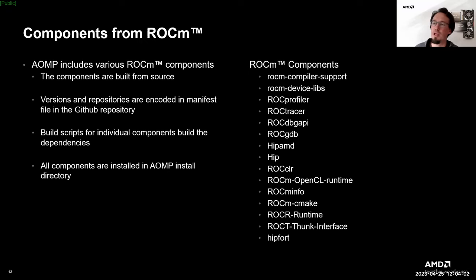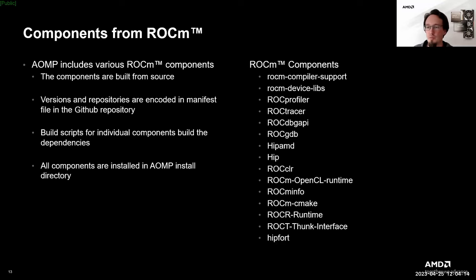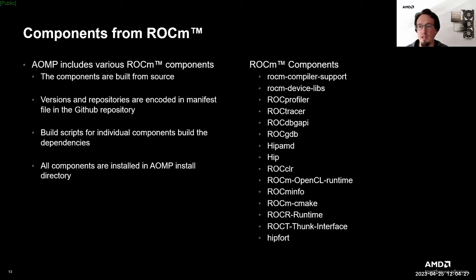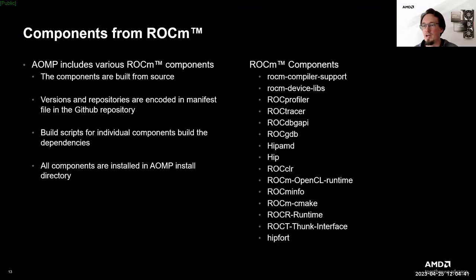Getting back to the ROCm components mentioned earlier, AOMP includes a variety of ROCm components such as ROCgdb or the ROCA runtime. To keep track of the correct versions of the dependencies for a specific AOMP version, we use a manifest file that encodes the component, the repository, and the tag or SHA of that repository that should be pulled in. AOMP lives on a particular ROCm release branch for most components, which will only change for a new ROCm release. Sometimes it is necessary to update to a more recent commit or tag to get a needed bug fix.